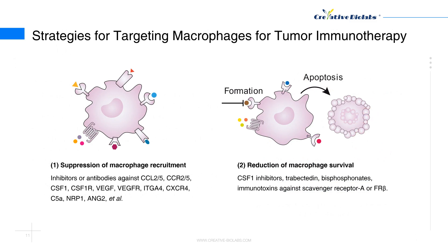Due to the limitations and shortages of traditional cancer treatments, immunotherapy has become the most promising cancer treatment. Various cancer immunotherapy strategies have emerged, including adoptive cellular immunotherapy, tumor vaccines, antibodies, immune checkpoint inhibitors, and small molecule inhibitors. Although most of these strategies are not meant to target macrophages directly or originally, macrophages contribute significantly to the final outcomes. The potential and promising strategies targeting macrophages have been categorized into six types based on their objectives.